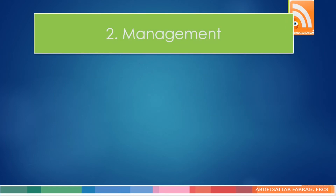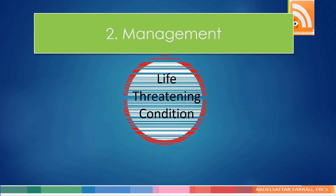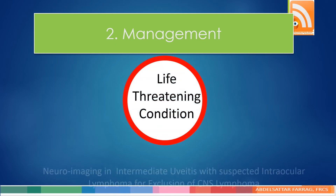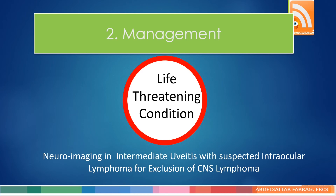The second category of pitfalls is pitfalls in management. We can divide these into four main points. The first is missing the exclusion of life-threatening conditions — for example, neuroimaging in intermediate uveitis with suspected intraocular lymphoma to exclude CNS lymphoma, or neuroimaging for other neurological conditions in neuro-ophthalmology, such as cases of papilledema.